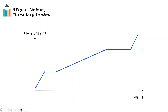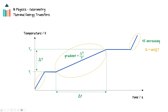Exploring the heating curve in closer detail, we can relate aspects of the graph to these concepts. In the sloping regions of the graph, the kinetic energy of the particles is increasing. These regions are described by the formula q equals mc delta T. Notice that the gradient of the line is the rate of change of temperature. Materials with high specific heat capacities will require more energy to change temperature, resulting in smaller gradients on the temperature-time graph.